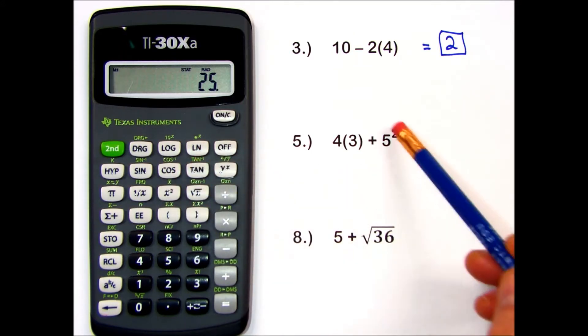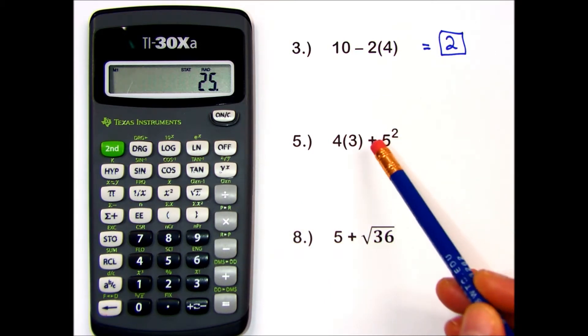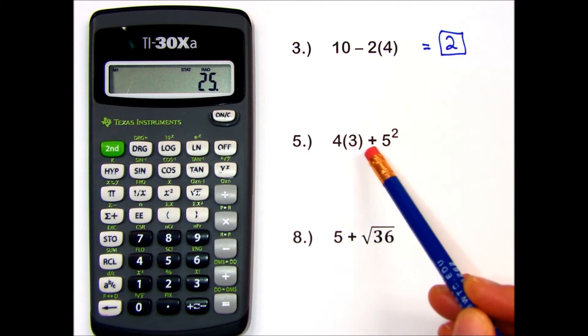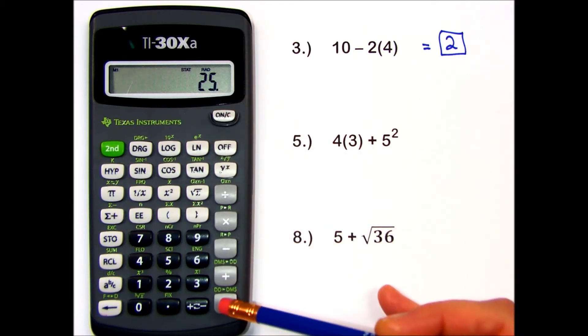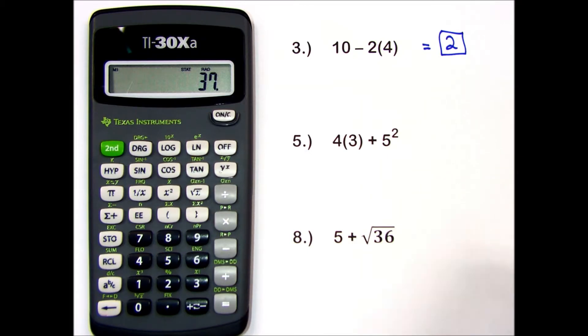At this point, the calculator is showing the answer to the 5 squared part. It's saving the addition and multiplication for later. When I press equals, that is performed and I get my final answer, 37.